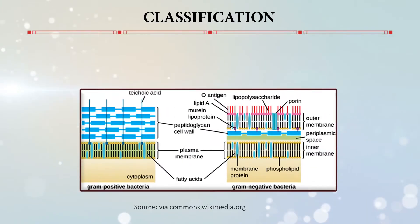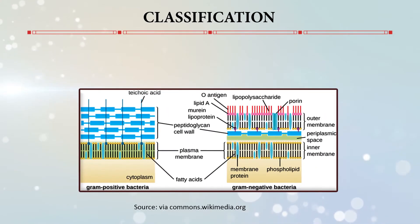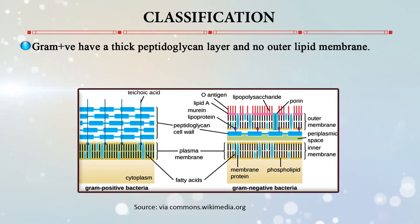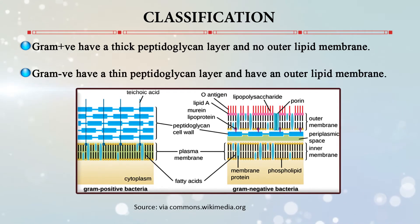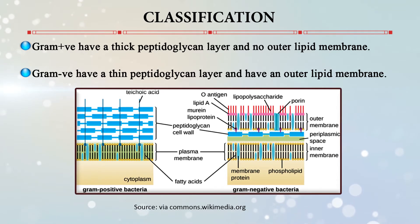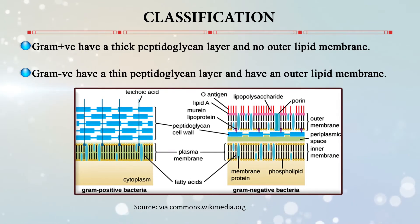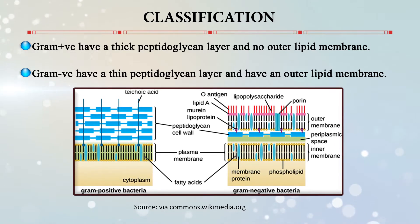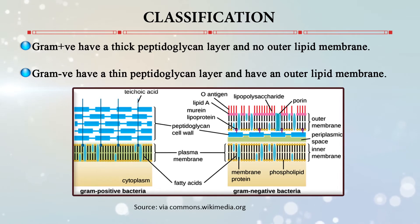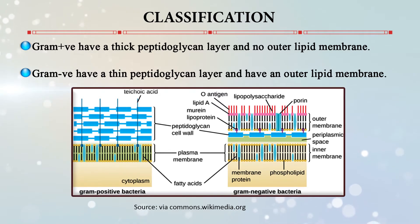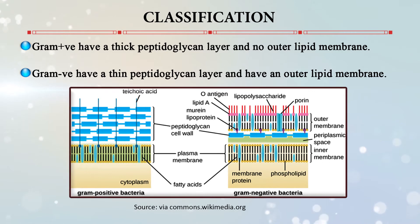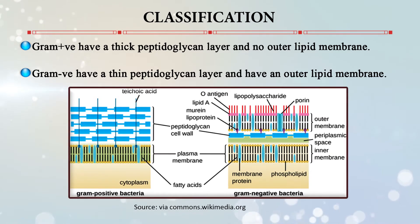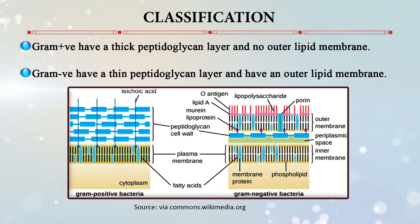In this figure, we can see the difference between Gram-positive and Gram-negative bacteria. Gram-positive bacteria have a thick peptidoglycan layer and no outer lipid membrane. Gram-negative bacteria have a thin peptidoglycan layer and an outer lipid membrane. In the Gram-negative figure, the thin peptidoglycan layer is visible, along with lipid A, murine lipoprotein, and other lipopolysaccharides. There is an inner membrane, an outer membrane, and a periplasmic space in between.